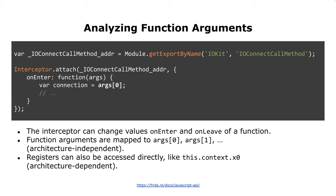Once you know which functions are interesting, you can write Python or JavaScript to interact with them. Here's a JavaScript example using IOKit for drivers on iOS - I'm attaching to one of those functions. Whenever it's called, I can get the first argument with args[0], args[1], and so on. This works independent from the architecture. If you need to modify registers, use the this.context thing - that's architecture-specific and lets you access registers directly and set them to certain values.